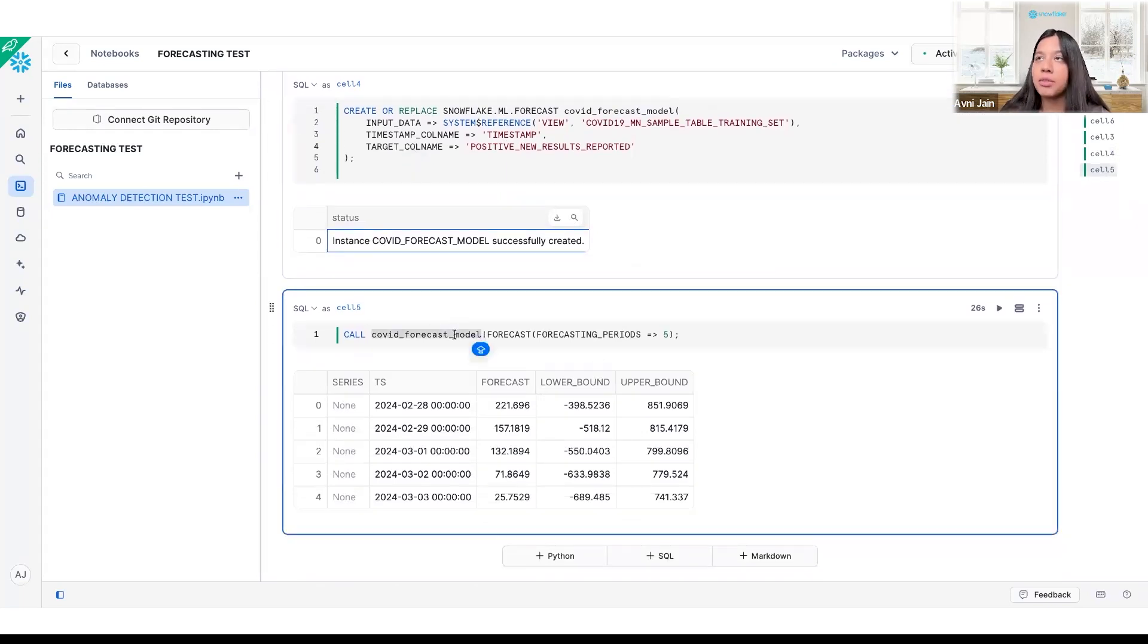Again, this is just the name of the model that I created up here as well as the function for forecast and you can select how many forecasting periods you'd like. In this, I was just interested in seeing for five days after my training period what the data looks like but you can play around with this. You can also change some of the other configurations if you're interested. This output is pretty standard so you'll see the five timestamps after my training period as well as what the forecast is and the lower and upper bounds so this is just telling me that it's normal for it to be in this range but this is kind of what the value is that we're predicting.